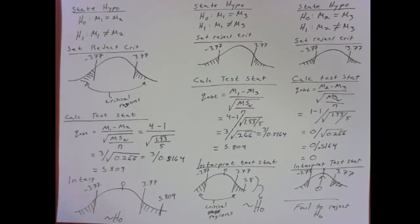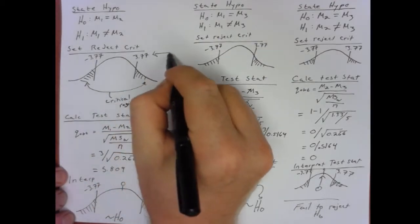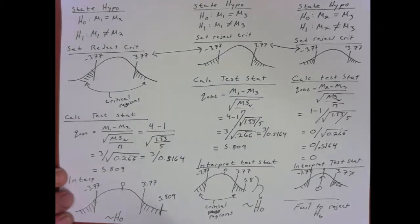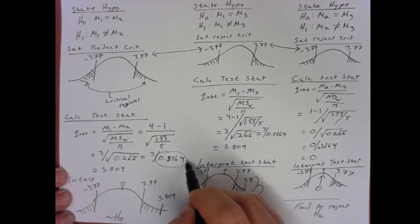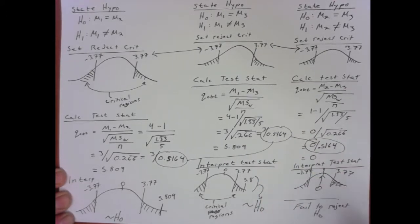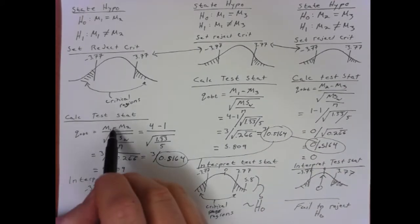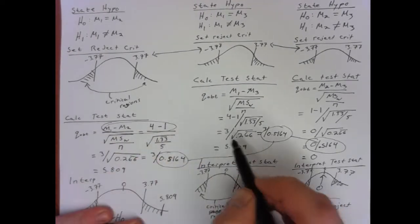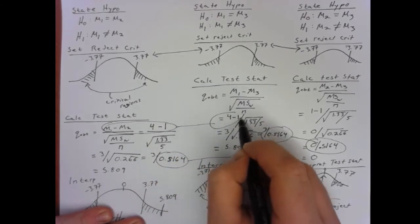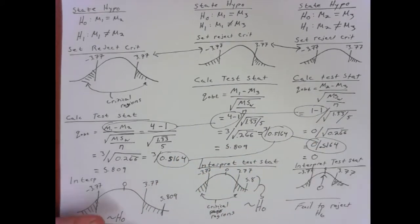That's a lot of work, but most of it is actually unnecessary. Notice that our rejection criteria did not change each time, our denominator did not change each time — the only thing changing is the different mean values, specifically the mean difference.